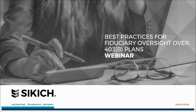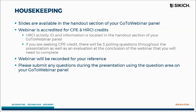Before we begin, a few housekeeping items. The slides are available in the handout section of your GoToWebinar panel. This webinar is accredited for CPE and HRCI credits. The HRCI activity ID is in the handout section. For CPE credit, there will be three polling questions throughout the presentation and an evaluation at the conclusion that you need to complete. For polling questions, you just need to respond to mark your attendance.